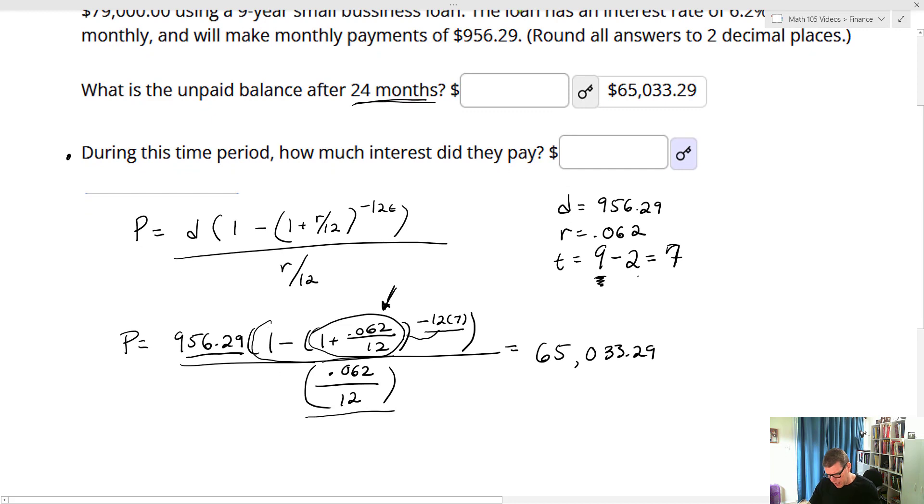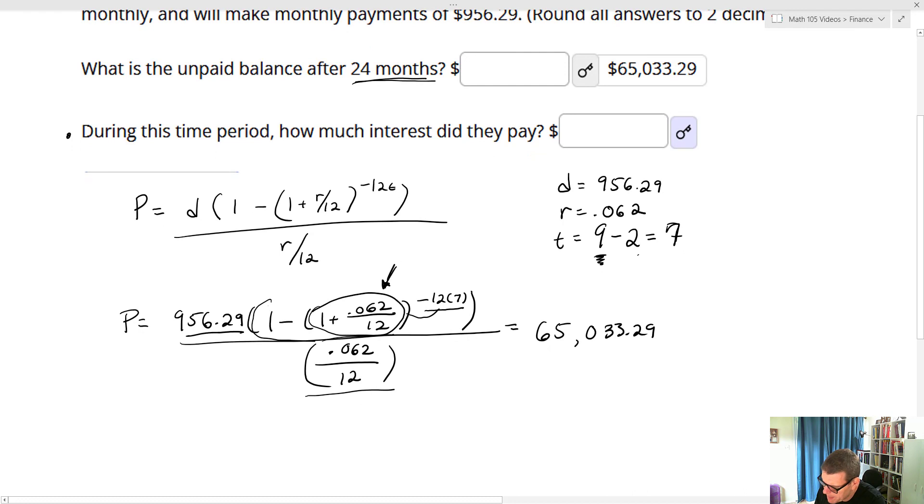So we start out. We're going to begin by figuring out what payments have they made so far. So the payments made so far, so they made a monthly payment of $956.29. And we're going to multiply that by 24, the number of months that have actually taken place, 24 months. So that's what's been paid already. So I've got $22,949.76.